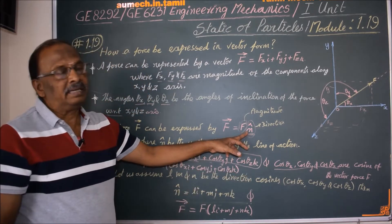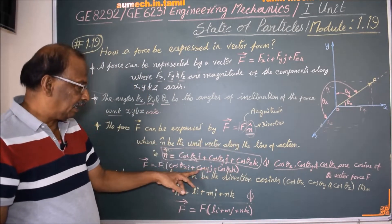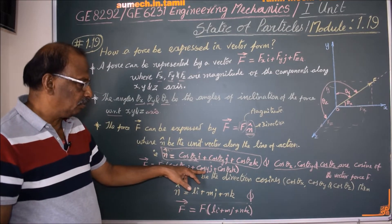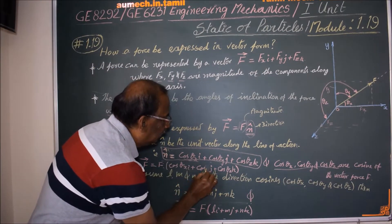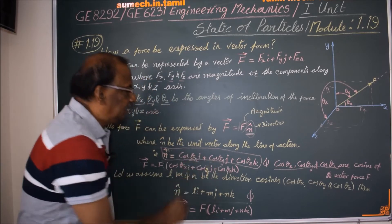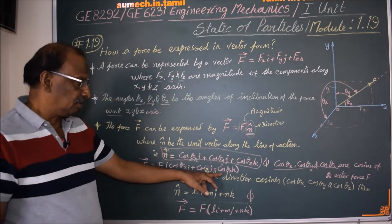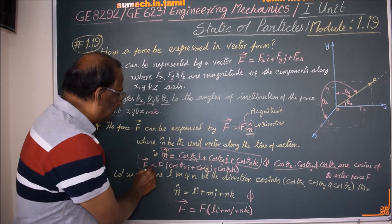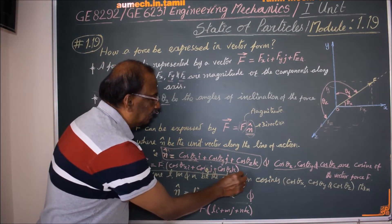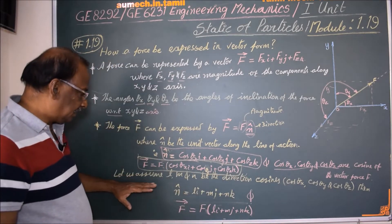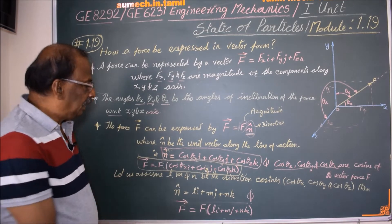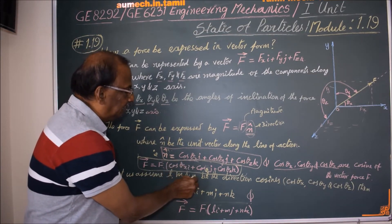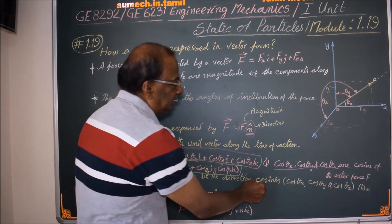The force vector is expressed using the unit vector. Here L, M, N are the direction cosines — that is, cos θx, cos θy, cos θz respectively.